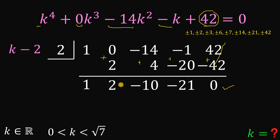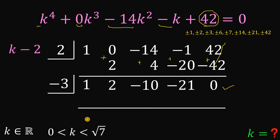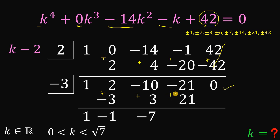We continue with the continuous synthetic division, again choosing from the factors of positive 42. Let's choose negative 3. Bring down 1. 1 times negative 3 is negative 3. 2 plus negative 3 is negative 1. Negative 1 times negative 3 is positive 3. Negative 10 plus 3 is negative 7. Negative 7 times negative 3 is positive 21. And negative 21 plus 21 equals 0. The remainder is 0, so negative 3 is also a zero of this quartic equation, and k plus 3 is a factor.